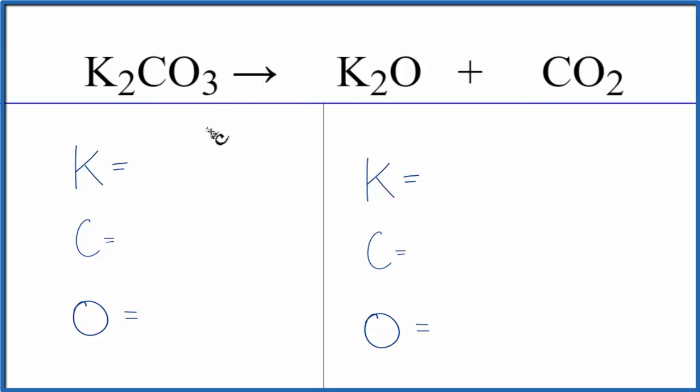To balance the equation, let's count the atoms on each side. We have two potassium atoms, one carbon, and three oxygen atoms.